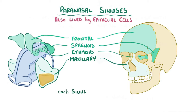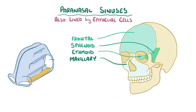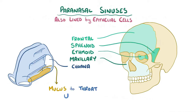Each of the sinuses normally produces mucus, which drains into the respiratory region. Holes at the back of the respiratory region, called choana, act like funnels to direct the mucus into the throat to be swallowed.